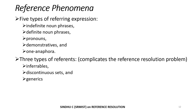Reference phenomena: in order to understand reference phenomena, we go through the various subdivisions. We have five types of referring expressions and three types of reference. The five types of referring expressions are indefinite noun phrases, definite noun phrases, pronouns, demonstratives, and one anaphora. There are three types of reference which complicate the reference resolution problem: they are inferables, discontinuous sets, and generics.